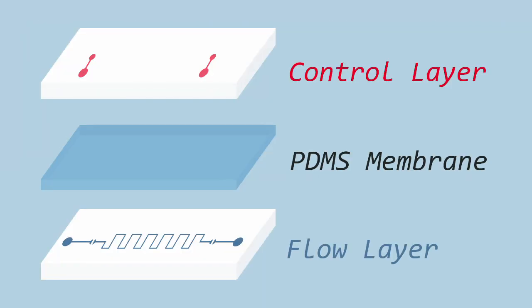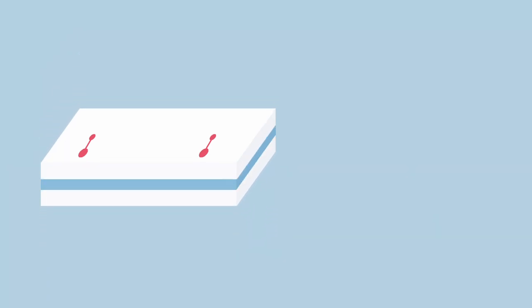In microfluidic chips, PDMS is used as the flexible membrane between the control and flow layers. It allows the chip to seal in a desiccator and also allows for the actuation of flow-manipulating valves. Valves require either negative or positive pressure to open and close.